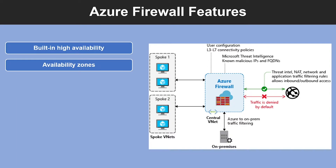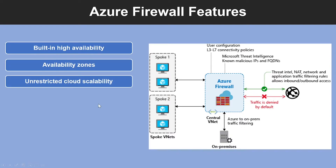The second feature is availability zones. Azure Firewall can be configured during deployment to span multiple availability zones for increased availability. The third feature is unrestricted cloud scalability. Azure Firewall can scale up as much as you need to accommodate changing network traffic flows, so you don't need to budget for your peak traffic.